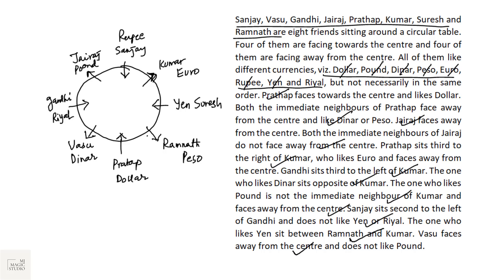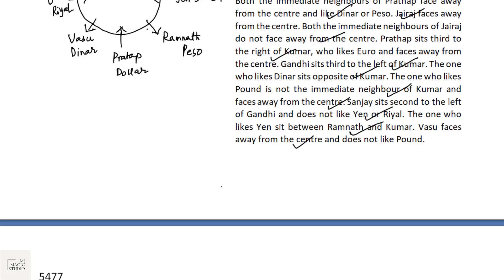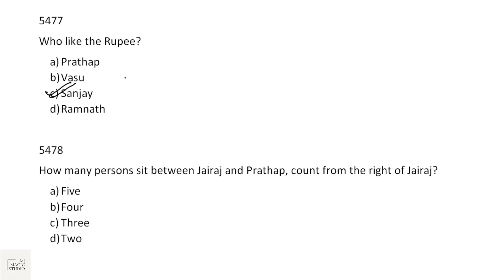With the given arrangement, who likes the Rupee? — Sanjay. How many persons sit between Jairaj and Pratap? Counting from the right of Jairaj: 1, 2, 3, 4 — there are 4 people between Jairaj and Pratap.